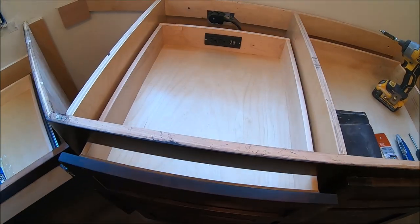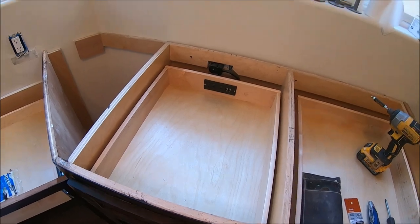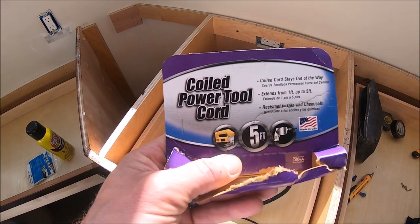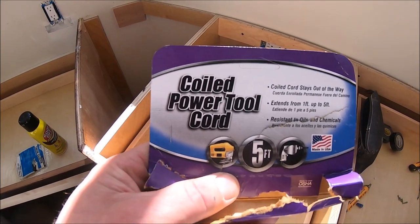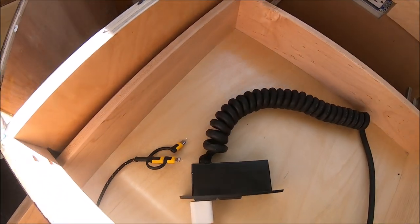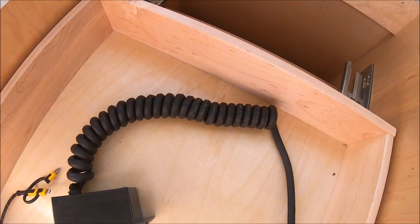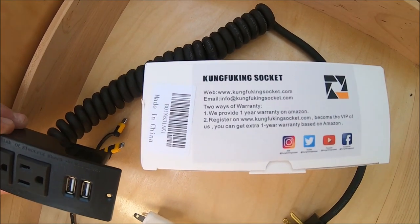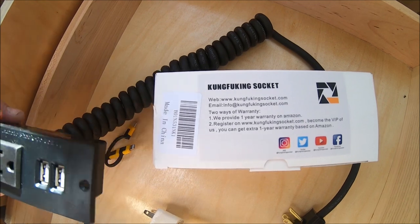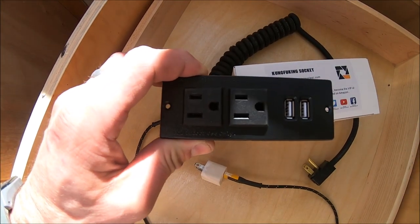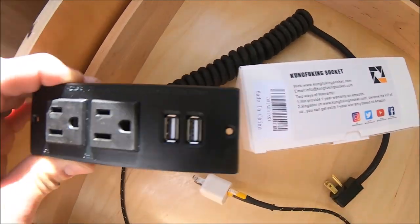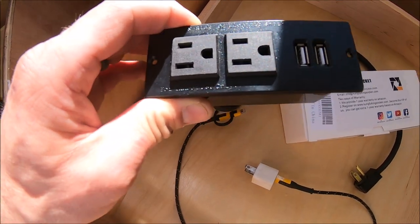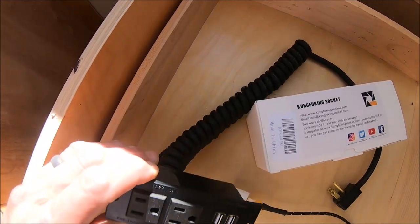This is what you'll need: coiled power tool cord—I'll leave links in the description for this. There's the coiled power cord. And secondly, you will need this unit, Kong socket. Yes, I know, strange name. But the socket includes two USBs, two plugs.